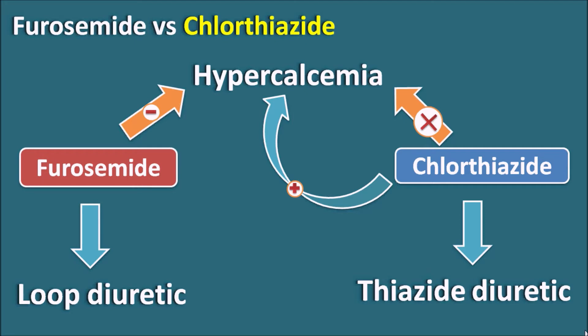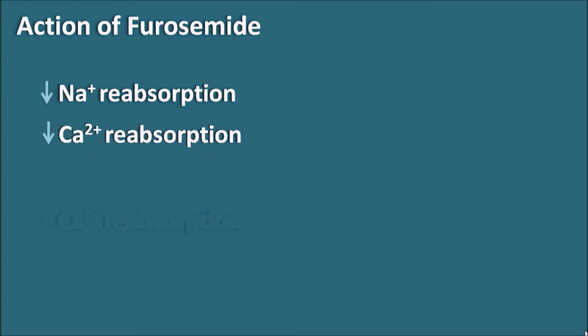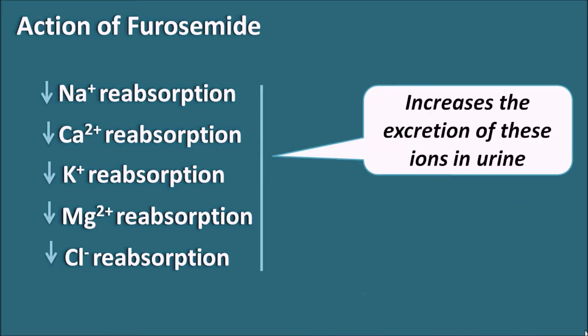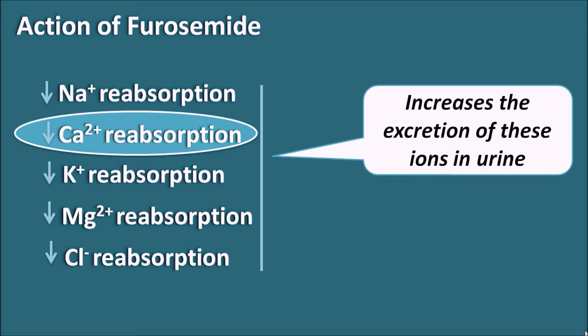Let us now see why furosemide increases calcium excretion while chlorothiazide decreases it. Furosemide is a loop diuretic that affects reabsorption of many ion types, inhibiting their excretion. It can inhibit reabsorption of sodium, calcium, potassium, magnesium, and chloride. Because of this inhibition, furosemide increases excretion of these ions in the urine. Our focus here is on calcium — furosemide decreases calcium reabsorption, thereby increasing calcium excretion.